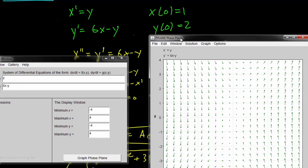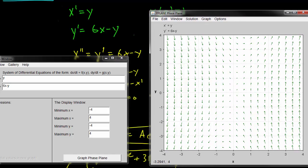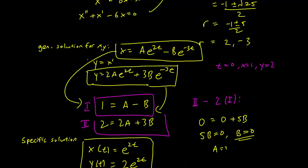Let's look at our solution for this problem. Our solution was x(t) equals e to the 2t and y(t) equals 2e to the 2t. You can think of this as the solution is basically a trajectory of points.